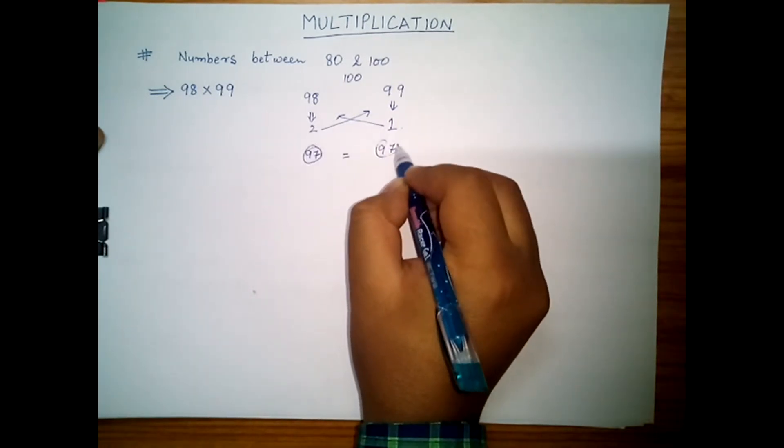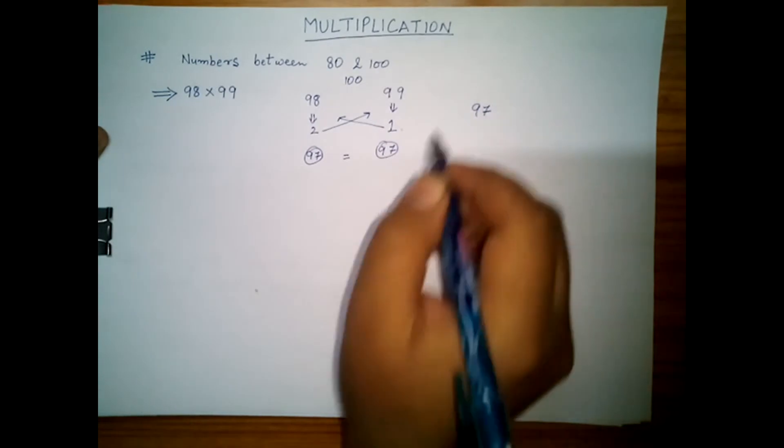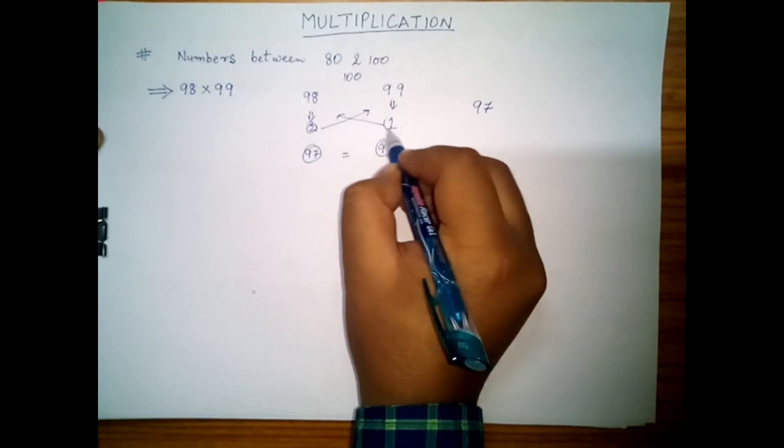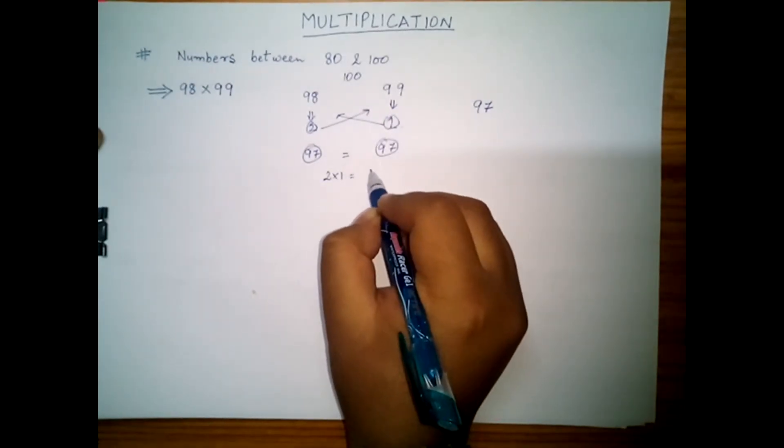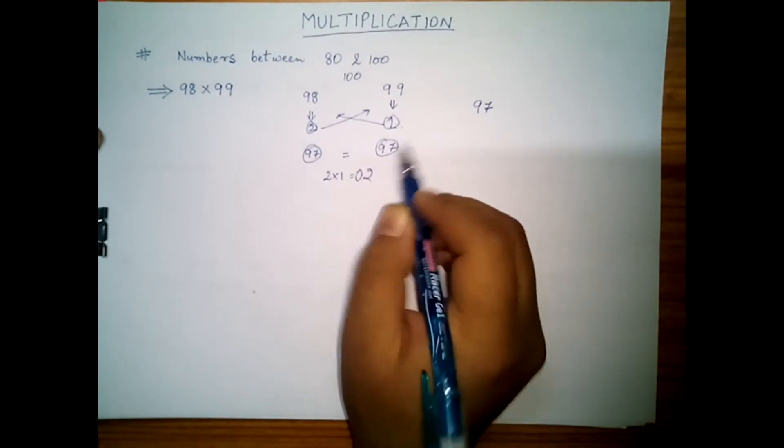This 97 becomes the first two digits of our product. Now for the last two digits, we multiply these two numbers. For example, 2 into 1 which comes out to be 2. As it is 2, we will add 0 at its left side, so 02.